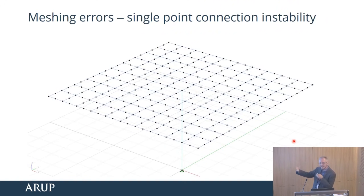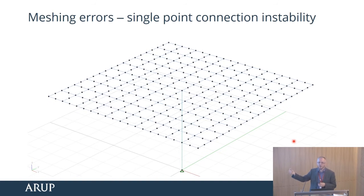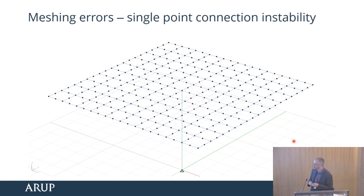Another problem: this is a flat slab with a column attached to it — these are quad 8 elements. Quad 8 elements normally can only have 5 degrees of freedom. It's very difficult to put a drilling Z-Z degree of freedom onto a quad 8 element, so this column will actually be torsionally unstable — zero stiffness. The solution: stick a Z-axis restraint onto those elements. Foundations do have a torsion restraint even if we don't use them, so just model it in.